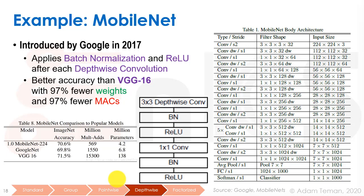Depth-wise convolution became very popular in MobileNet, a highly reduced neural network introduced by Google in 2017. It applies batch normalization and ReLU after each depth-wise convolution, then runs the 1x1 convolution expansion followed by batch normalization and ReLU again — one such module repeats many times. MobileNet achieves better accuracy than VGG16 with 97% fewer weights and 97% fewer MACs.